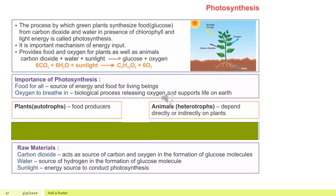This slide is a summary of photosynthesis. We can see how a plant produces glucose — that is food — from carbon dioxide and water in the presence of chlorophyll. The importance of photosynthesis is that because of it we get food, and we get oxygen to breathe.